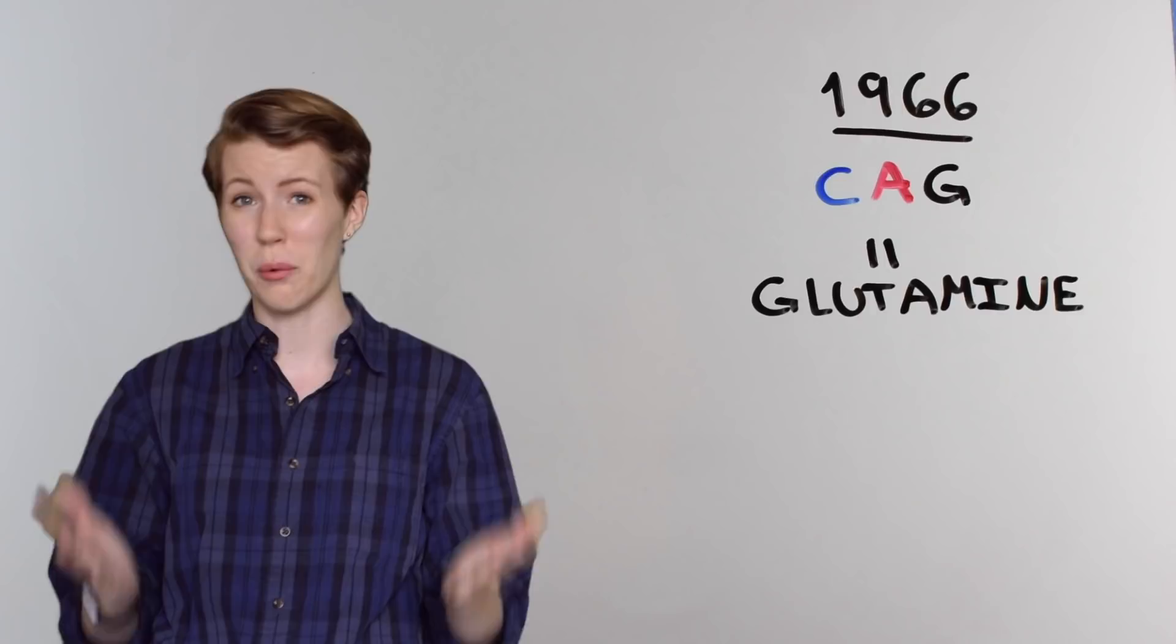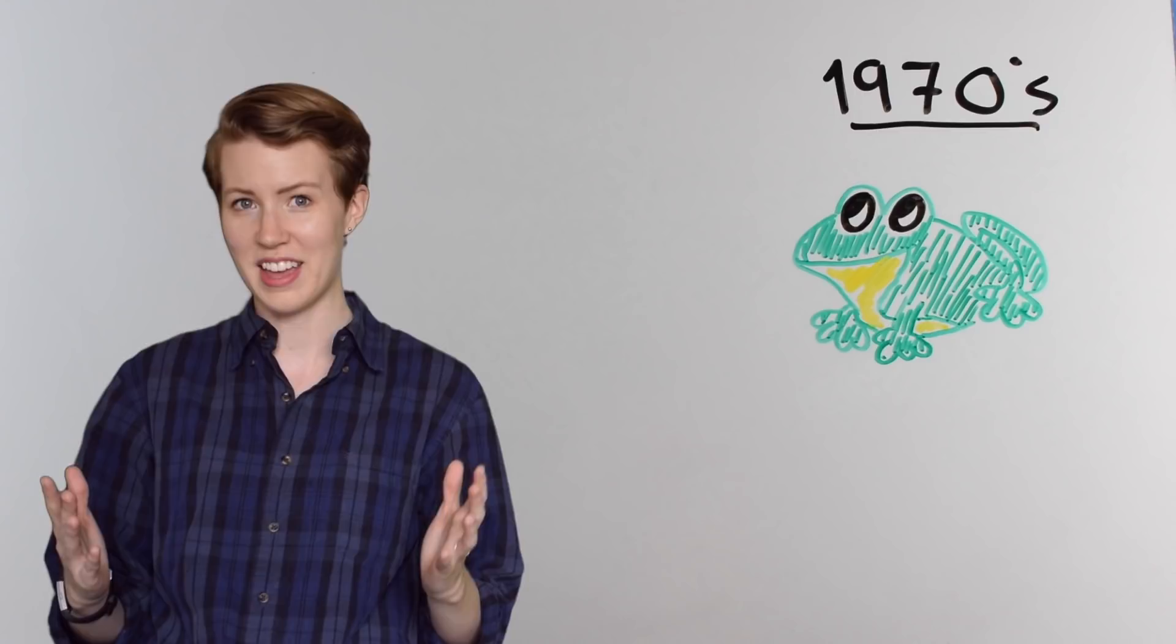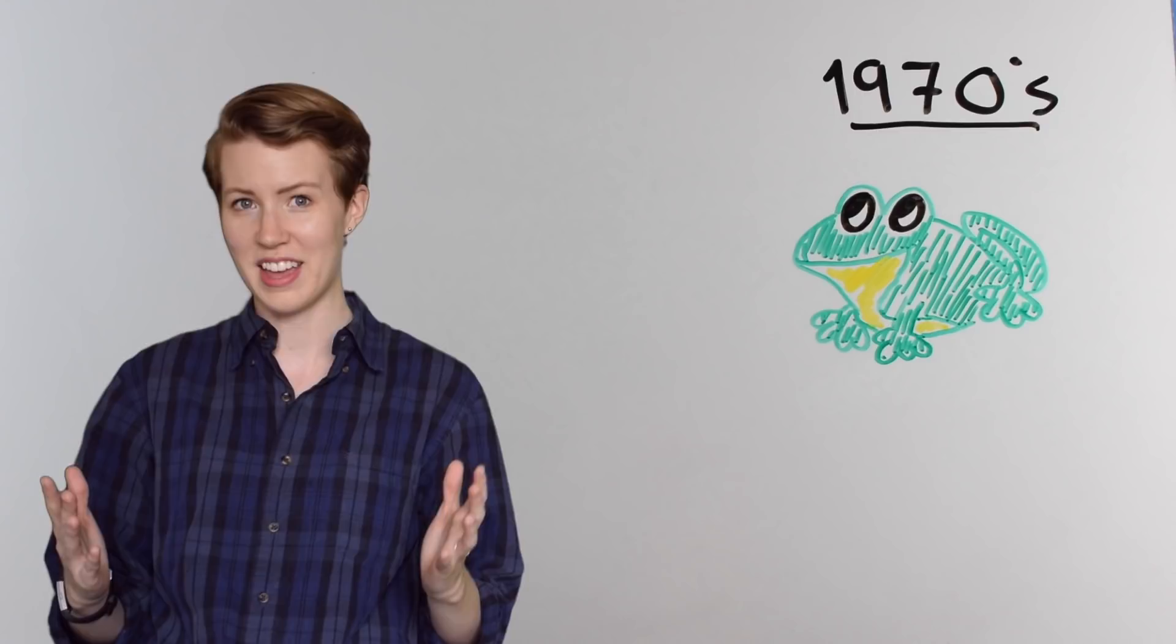But to really understand part of what made their work so special, you have to understand the time that they did it in. DNA was discovered in 1953, but it wasn't until 1966, 13 years later, that we really understood what all of those A's, G's, T's, and C's were actually for. They were coding for the individual amino acids found in proteins. The 70s brought the first animal gene ever cloned and the ability to actually sequence DNA. And it wasn't until 1983 that we found a way to be able to make more DNA really quickly using polymerase chain reaction, or PCR for short.